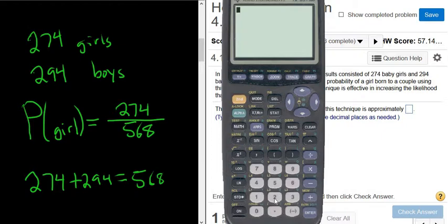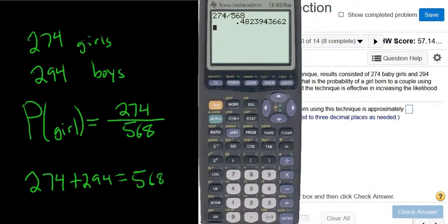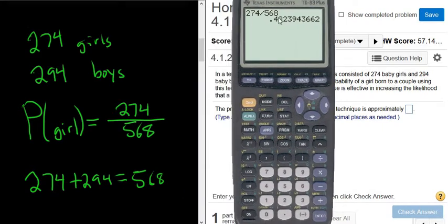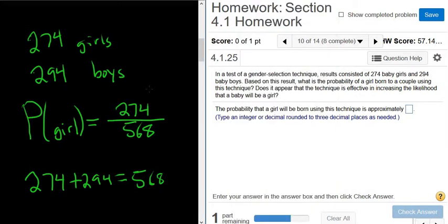So putting this in the calculator, it's 274 divided by 568. So 0.48, and it wants three decimals, so that would be 0.482. Okay, 0.482. I'm going to write that down. So the answer here would be 0.482.